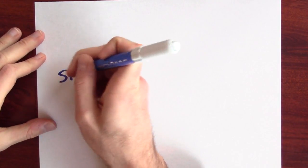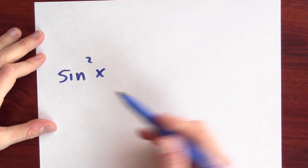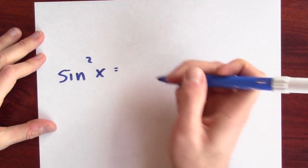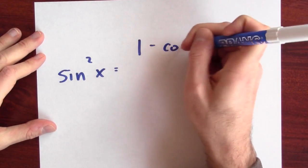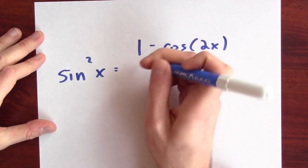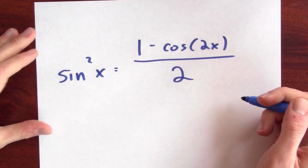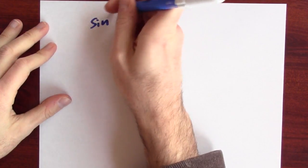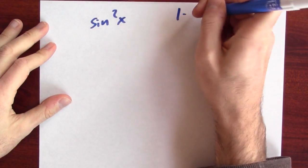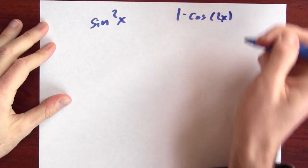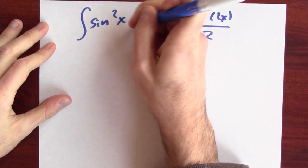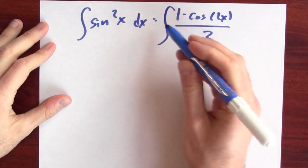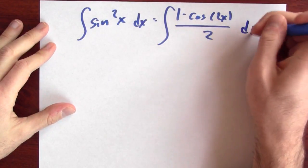It seems really hard. Well, there's a so-called half-angle identity — this is the trick. Sine squared x equals 1 minus cosine of 2x, all over 2. Since sine squared x equals that expression, the anti-derivative of sine squared x equals the anti-derivative of (1 minus cosine 2x) over 2.